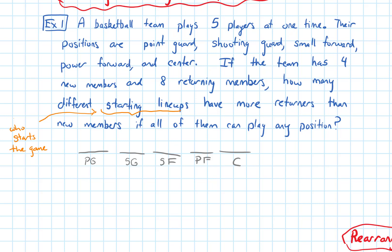Because the question says how many different starting lineups have more returners than new members, there are a few different ways that could happen. Like you could have all returners and 0 new members, or you could have something like 3 returners and 2 new members. So what this suggests is that we consider some cases in our problem.